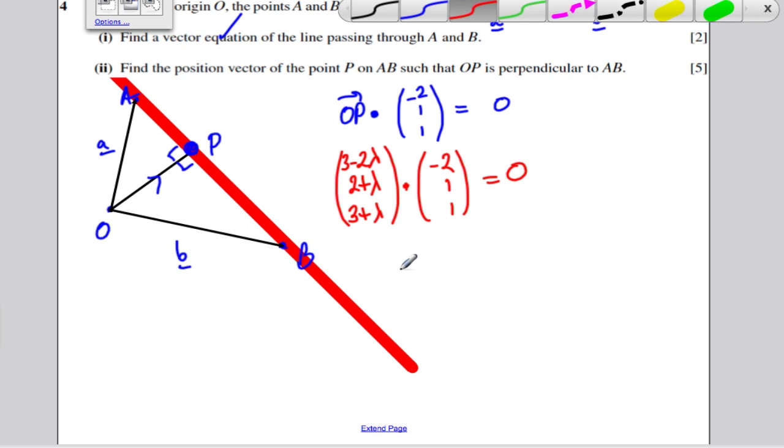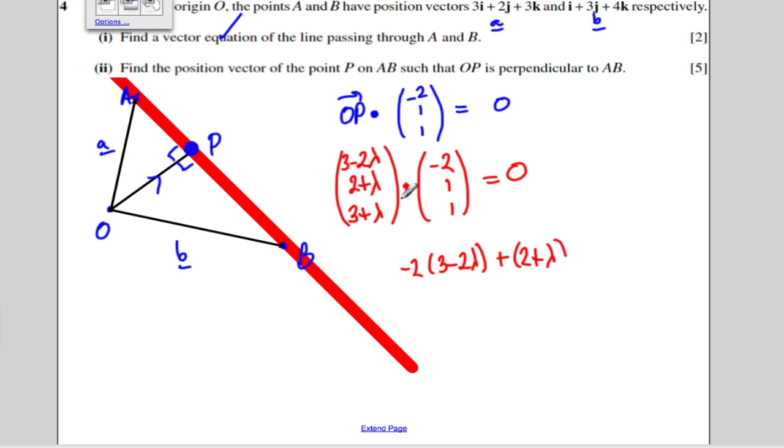This times this would be minus 2 times 3 minus 2 lambda. And one lot of that, so it would be plus 2 plus lambda, plus one lot of that, plus 3 plus lambda. And I know this must equal 0.